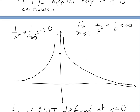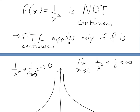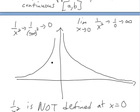So it's just not continuous there. The fundamental theorem of calculus applies only if f is continuous on the closed interval a to b — it doesn't have to be everywhere, just on that closed interval. So if a is negative one, that value exists; and at b equals three, that value exists. But zero lies between negative one and three, where the function blows up to infinity, so you get a messed up answer.